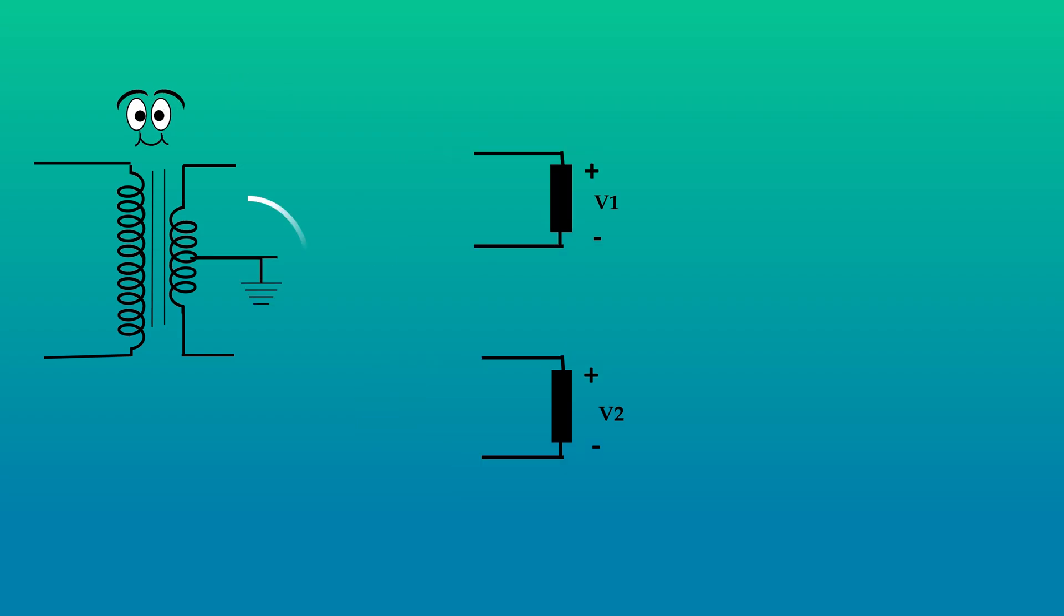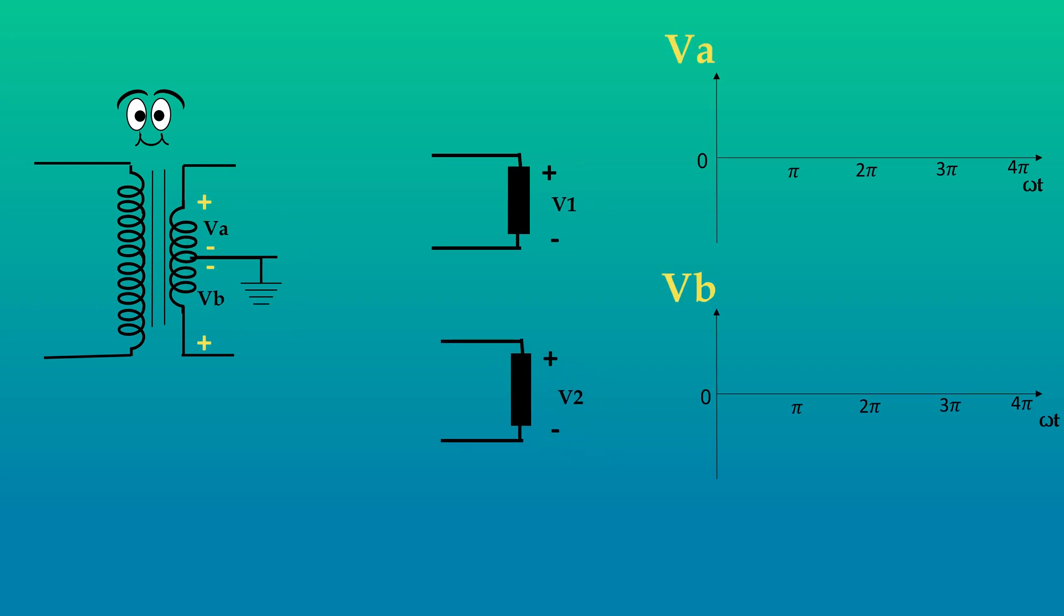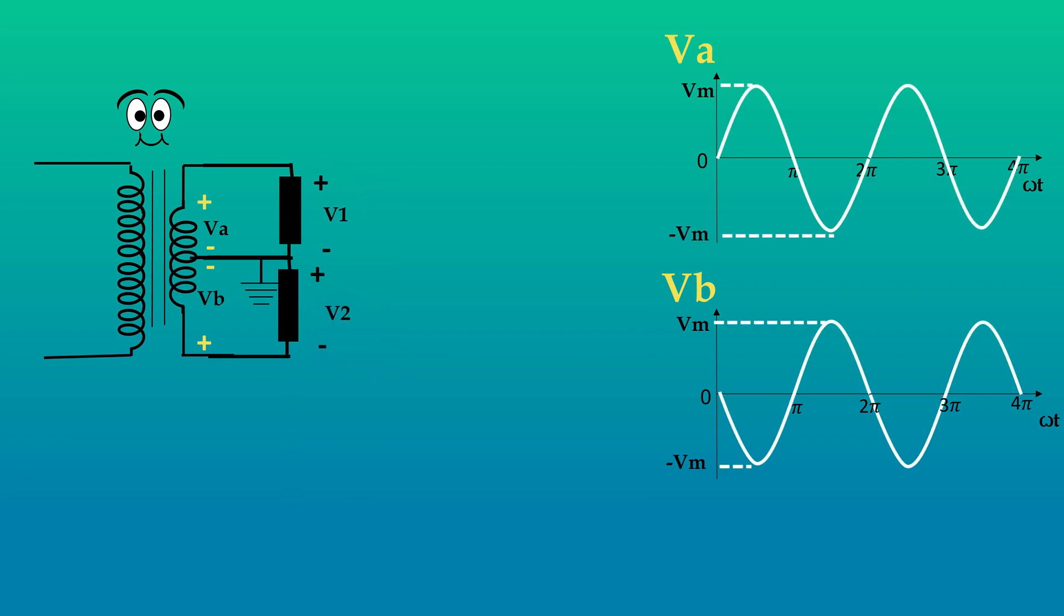A center tap is a contact made to the point halfway along a winding of a transformer. This center tap is grounded. This provides two separate voltages which are out of phase with each other and have the same magnitude.